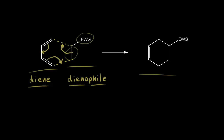That gives us our product on the right, which is a cyclohexene ring. Following our pi electrons with colors: the red pi electrons form this bond, the blue pi electrons on the dienophile form this bond, and the magenta electrons on the diene move down to form the double bond, giving us our cyclohexene ring — all at once. I drew the electrons going counterclockwise, but it doesn't matter; you could draw them clockwise. What matters is moving your six pi electrons to give you your product.